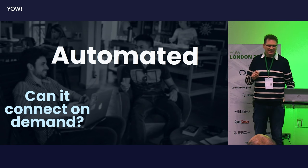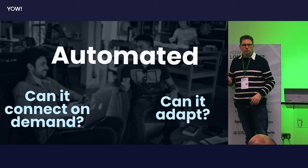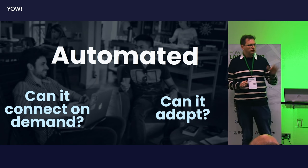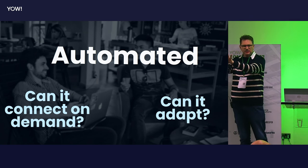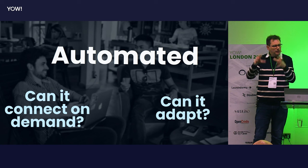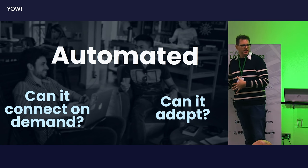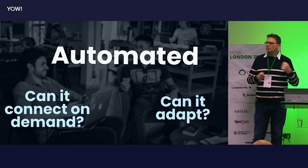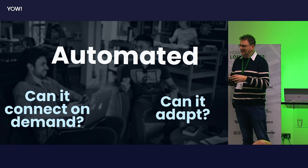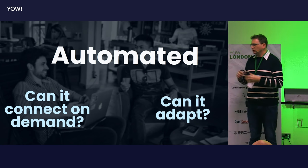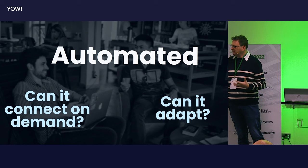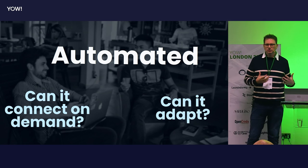So the first litmus test is: can it connect on demand? The second one is: can it adapt? As I make changes — as I replace my database with an API, or take a series of APIs and replace them with a database, thus completing the circle of life — can my integration layer automatically adapt? Or do I have to go back into my drag-and-drop UI and fix it? Update my GraphQL resolver? If I have to constantly go and maintain my integration layer, it is by definition not automated.